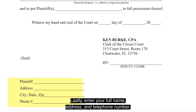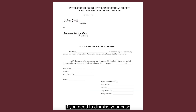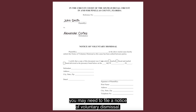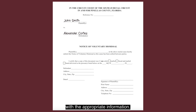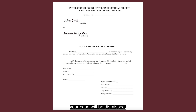Lastly, enter your full name, address, and telephone number. If you need to dismiss your case before receiving a judgment on one or both counts of your complaint, you may need to file a notice of voluntary dismissal. Fill in all of the fields with the appropriate information. Once you file the notice of voluntary dismissal with the clerk, your case will be dismissed as long as all parties are listed.